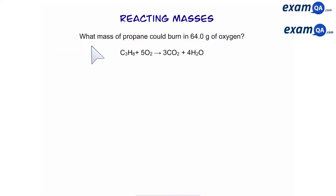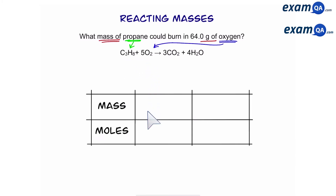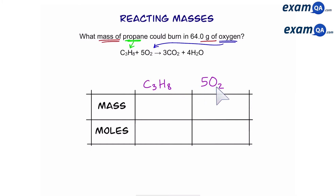Let's try another question: what mass of propane could burn in 64 grams of oxygen? Again, the first thing we're going to do is highlight 'mass of' and 'grams of'. So mass of propane and grams of oxygen. Next, we're going to make our mass and moles table. We write down the two most important things — propane and oxygen. Carbon dioxide and water we can ignore. We know the mass of oxygen is 64, and the mass of propane is what we want to work out.